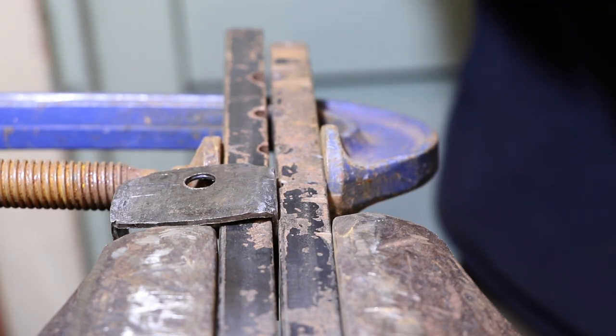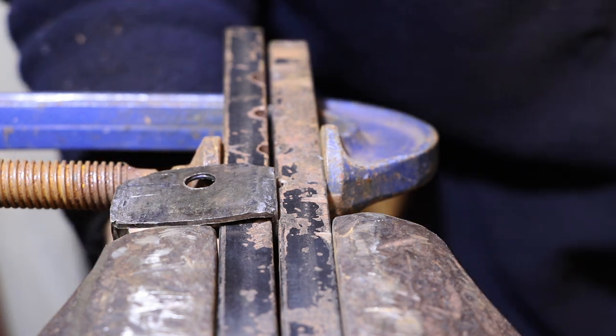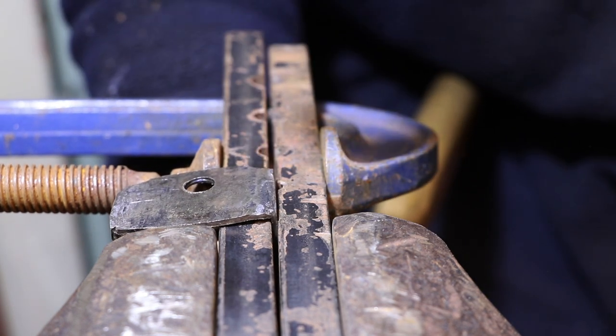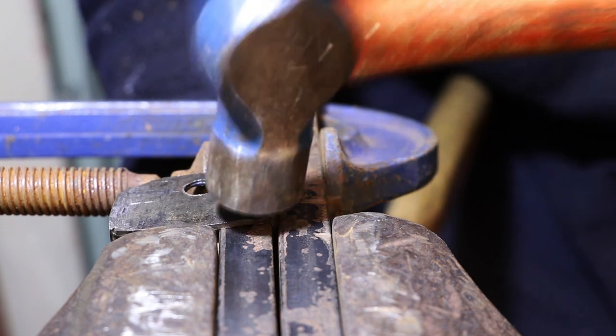This jig is the one I use to file tenons on round bars that's why there's a series of holes up the center. But you can make this jig just with two separate bars if you wanted, or with one bar that's bent in half. It doesn't have to be hinged.